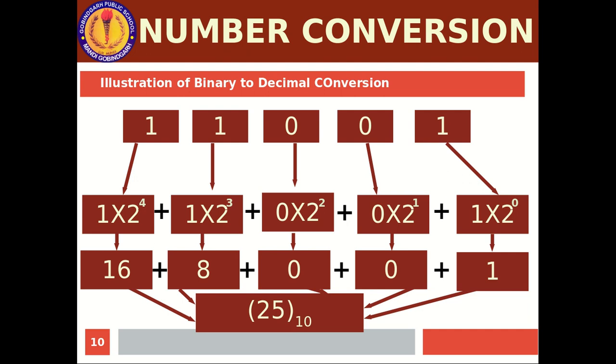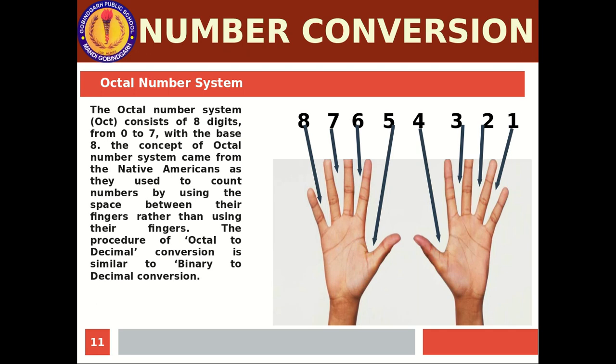Now comes the octal number system, which we discussed in the previous session. The octal number system consists of 8 digits — 0 to 7. Not 0 to 8, not 1 to 8, but 0 to 7, with base 8. An interesting fact: the concept of the octal number system came from Native Americans, who used to count numbers by using the spaces between their fingers rather than their fingers themselves. If you count the spaces between your fingers, that gives 8, not 10.